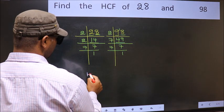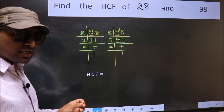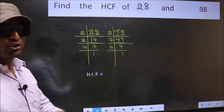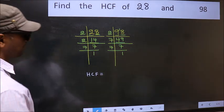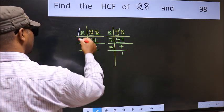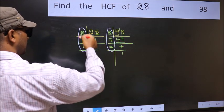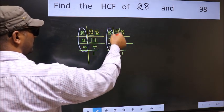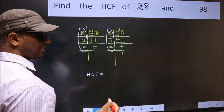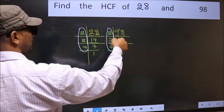Therefore, our HCF is the product of the numbers which should be present in these 2 places. That is here and also here, here and here. So now let us find the numbers which should be present here and here.